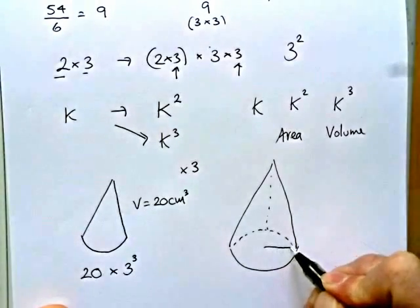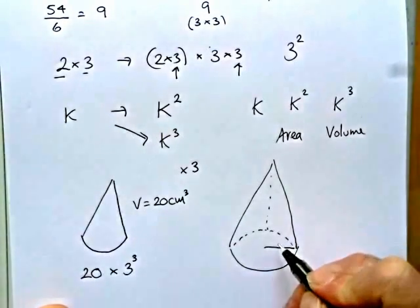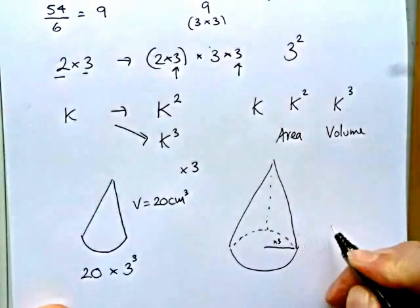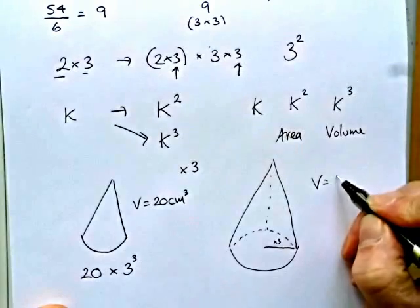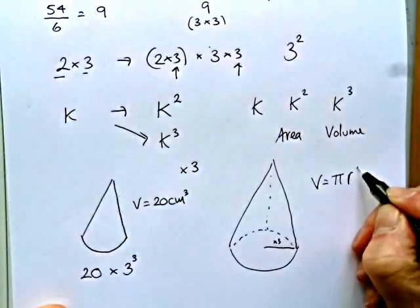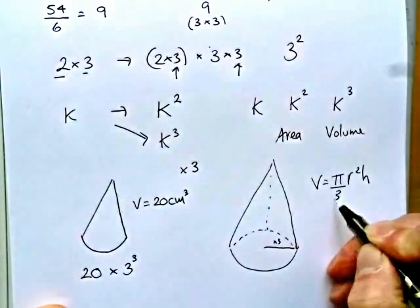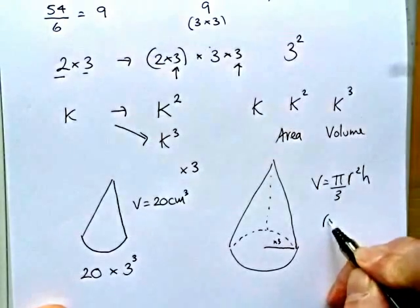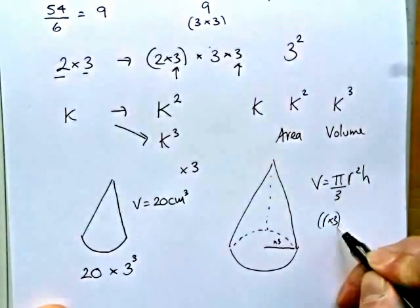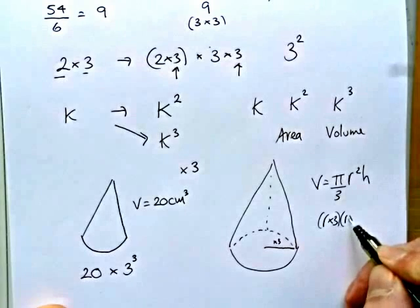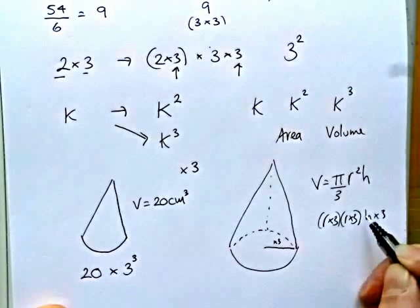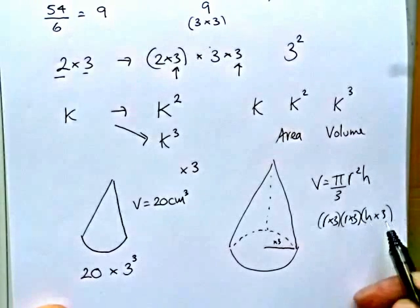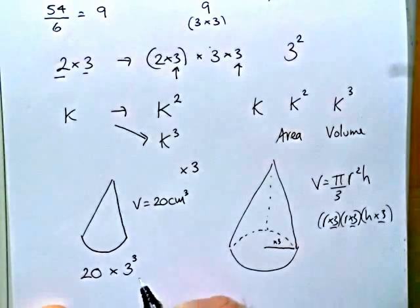You would have had the radius that's been changed by 3, and the radius is squared in the formula. So if I write the formula out, pi r squared h over 3. So you'll have a radius times 3 for the first r times the radius times 3 for the second r times the height times 3. And that's where you can see the factor of 3 coming in 3 times.